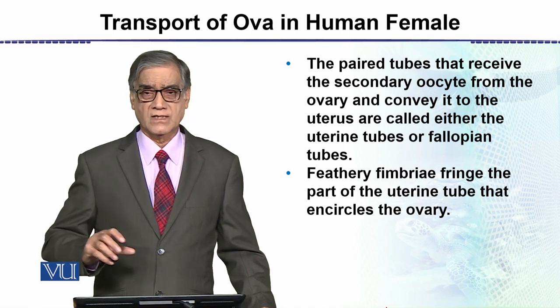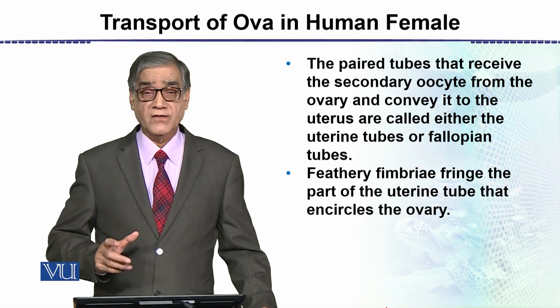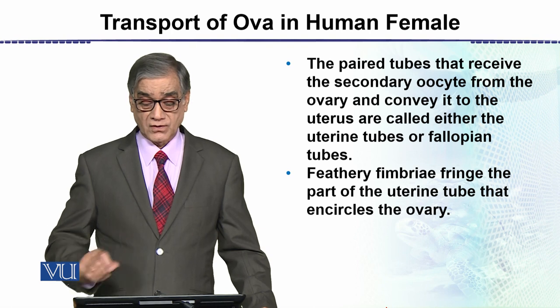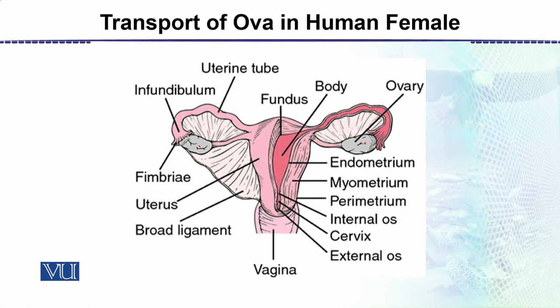The feathery fimbria fringe the part of the uterine tube and encircle the ovary. In this diagram we can see the transport — ovary سے جب egg release ہوتا ہے, which is called the ovulation process, تو یہ egg then moves this way. یہ fimbria ہیں جو سب سے پہلے this egg کو attract کرتے ہیں into the tube. یہاں سے لے کے یہاں تک this part is about 10 cm long.